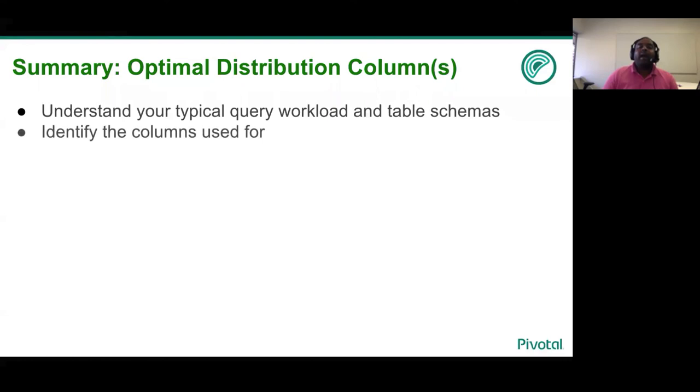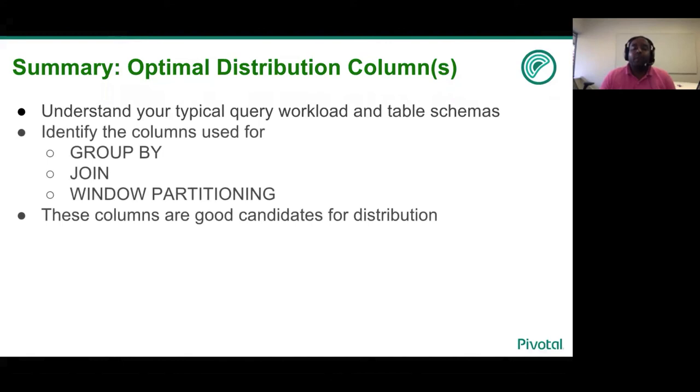Then, identify the columns that will typically be used for grouping, joining, or window operation. These are good candidates for distribution because window, join, and group by operations are quite expensive, and you want to maximize parallelism. You want to maximize operations done locally on your segments and little tuples being redistributed across these segments.